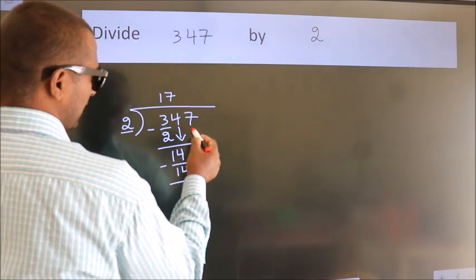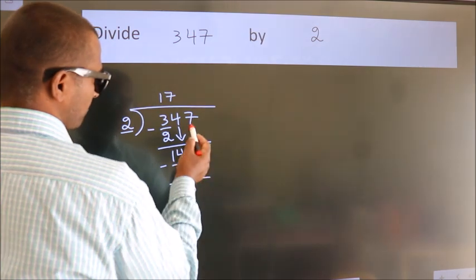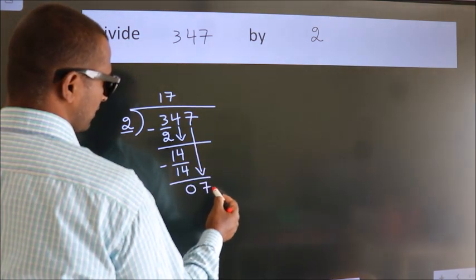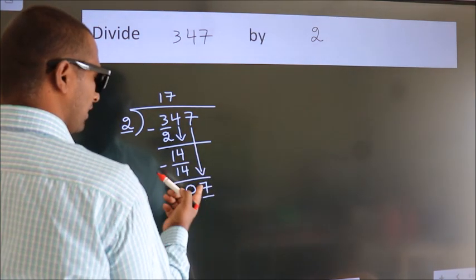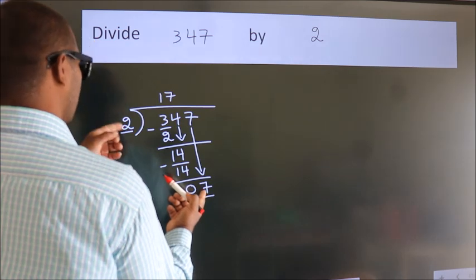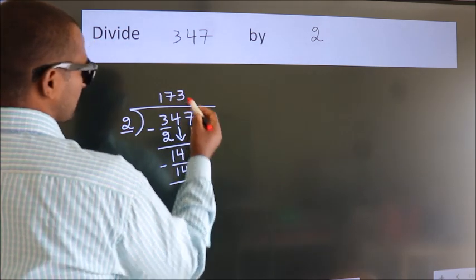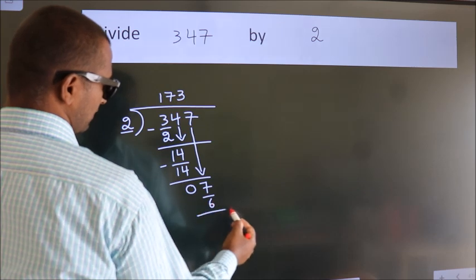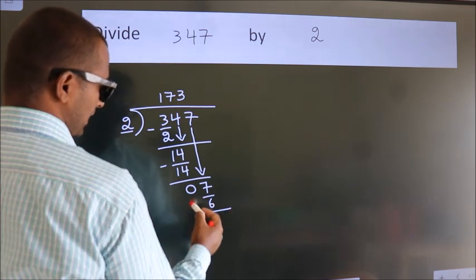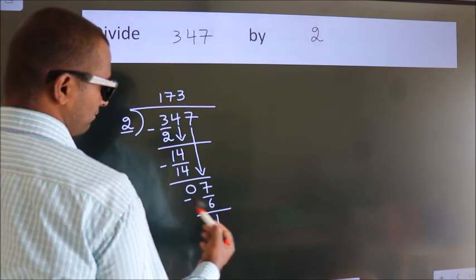After this, bring down the beside number. So 7 down. So 7. A number close to 7 in 2 table is 2 3s 6. Now we subtract. We get 1.